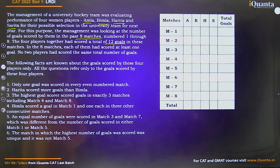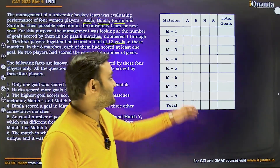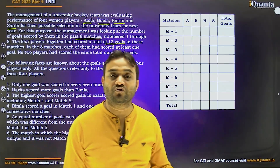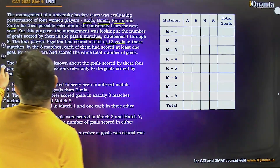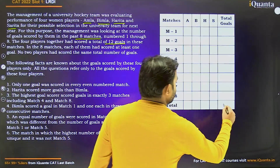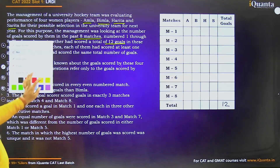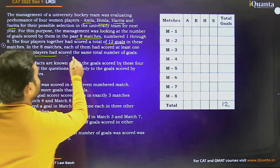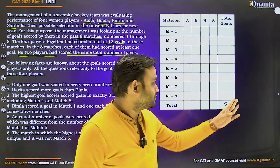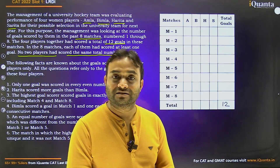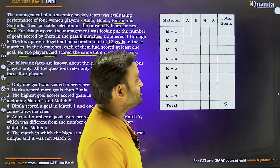No two players had scored the same total number of goals. In each match, at least one goal was scored. Total number of goals scored was 12. So four players, total goals 12, all distinct. Now if we try to find those numbers, what could they be?